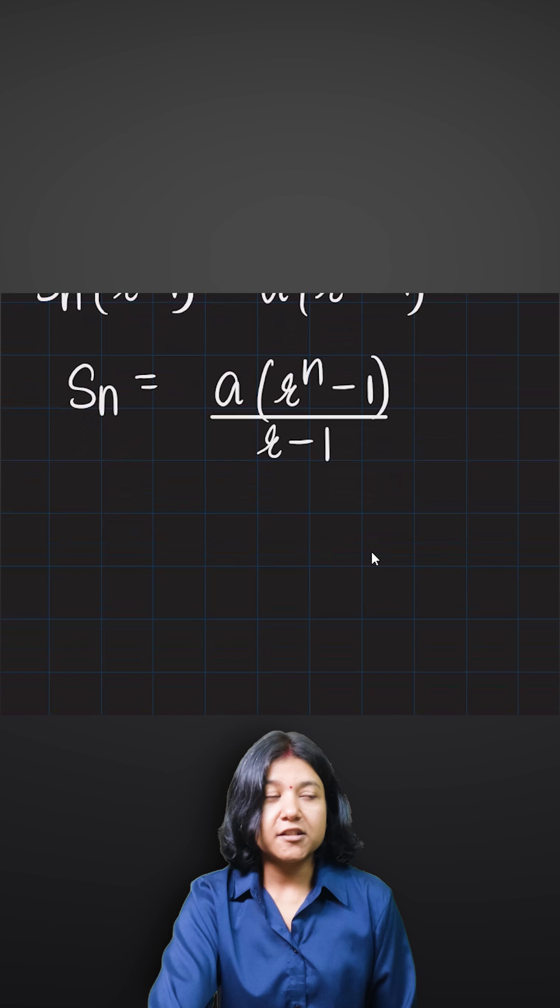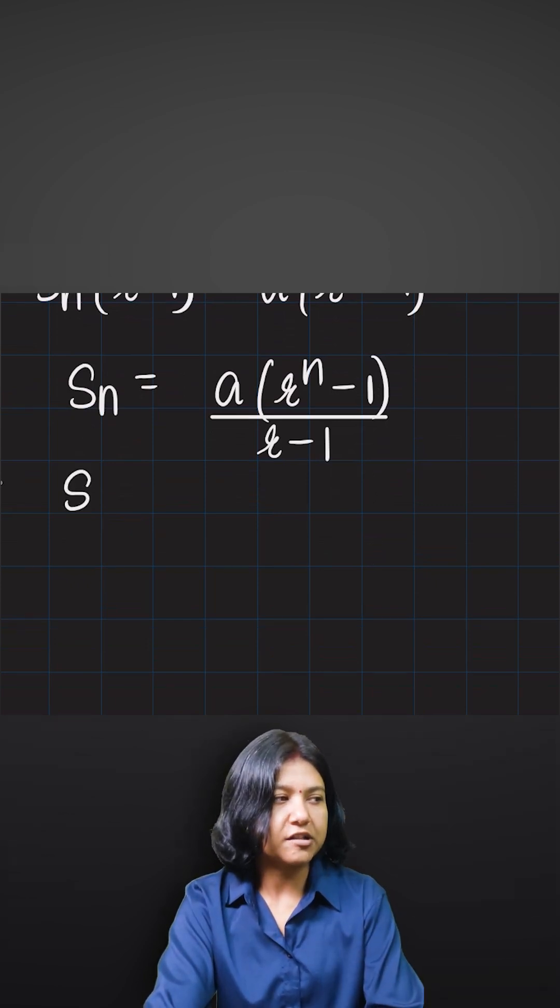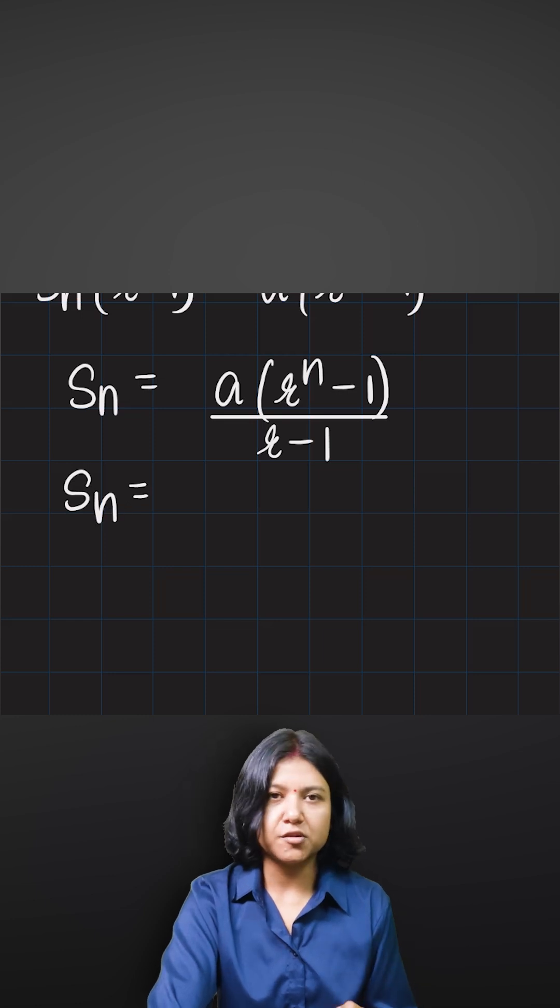So remember one thing very important: if the value of r is less than one, the formula itself is now reversed in a way that instead of subtracting the second equation from the first, we'll just reverse the manner or reverse the order of subtraction.